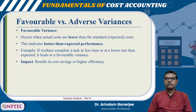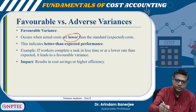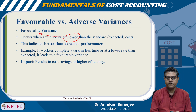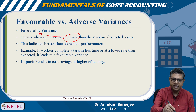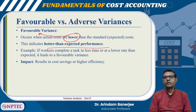As we discussed earlier, there can be favorable as well as adverse variances. The variance is favorable when the actual cost is lower than the standard expected cost — this indicates better than expected performance. For example, if workers complete a task in less time or at a lower rate than expected, it leads to a favorable variance.